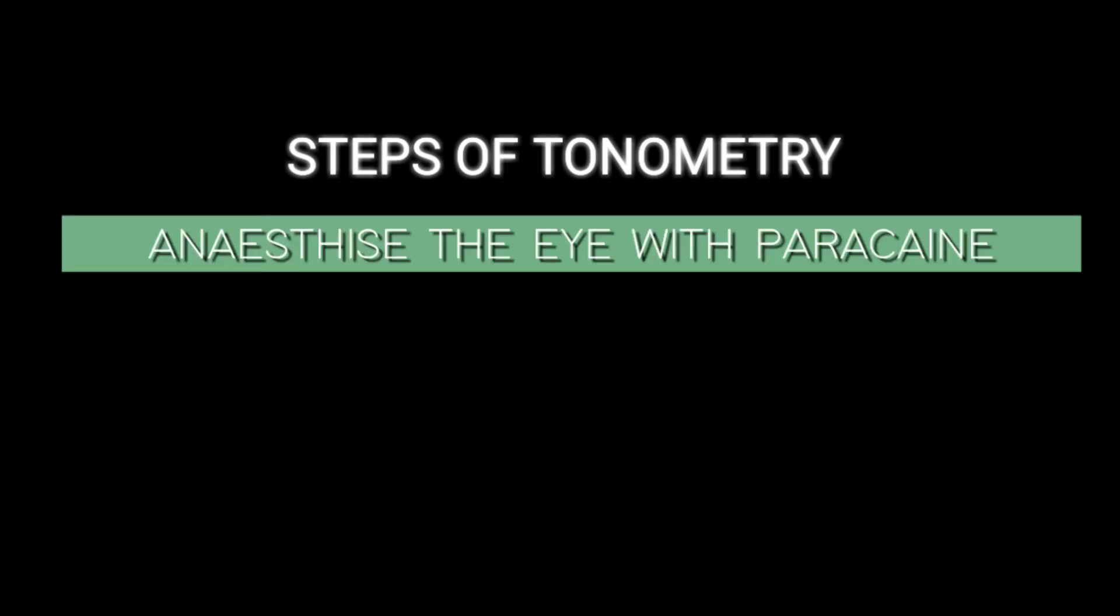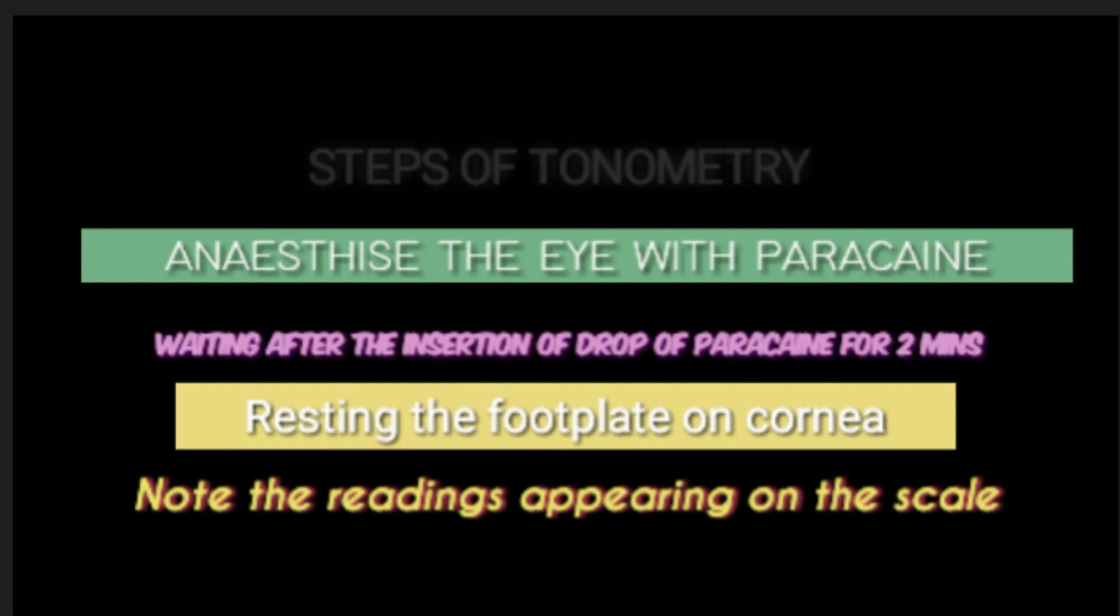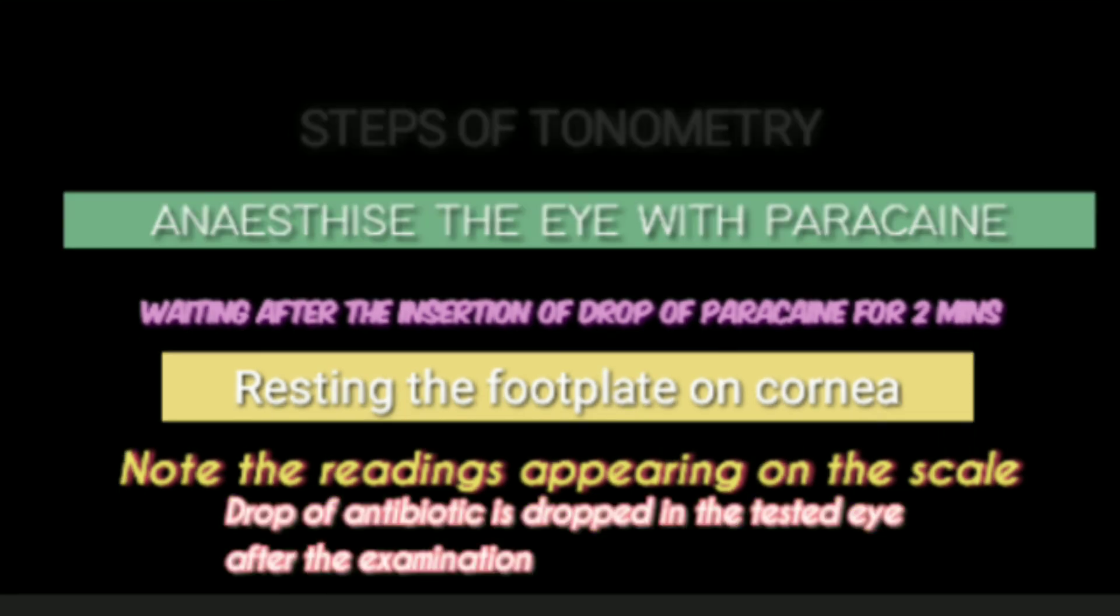The steps of tonometry are: first, anesthetize the eye with paracaine. Second, wait after the insertion of a drop of paracaine for two minutes. Third, rest the foot plate on the cornea. Fourth, note the readings appearing on the scale. After noting the readings, drop an antibiotic drop in the tested eye and make sure that there is no infection in the eye after the examination.